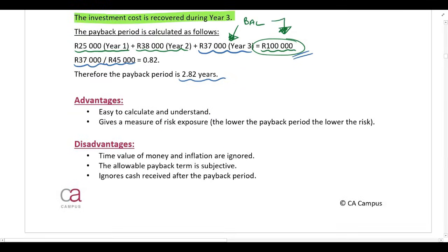The advantages of the payback period method are: first, it is very easy to calculate and understand, as seen in the simple calculation above. Second, it gives a measure of risk exposure — the lower the payback period, the lower the risk. You want the payback period to be as short as possible, because that means you recover your original investment cost quicker and the investment is less risky.